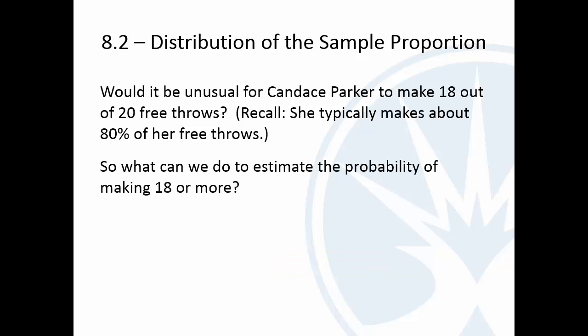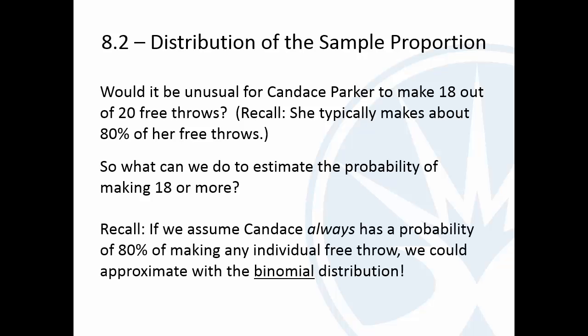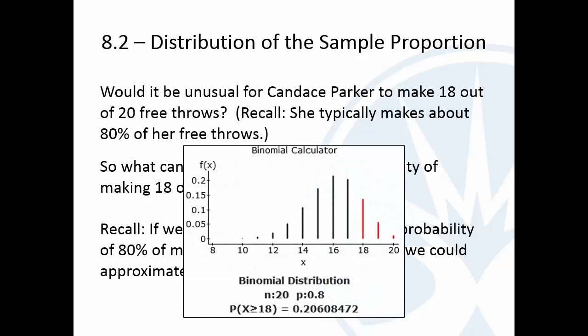So then what do we do? Well, what we can do is actually go back and just say this is a binomial distribution. We're assuming she always has a probability of 80%. So if she misses one, it's still 80% chance of the next one. Now Candace is a pro. She's been doing this for a long time. Her free throw probability is probably pretty constant by now. So I think that's a safe assumption.